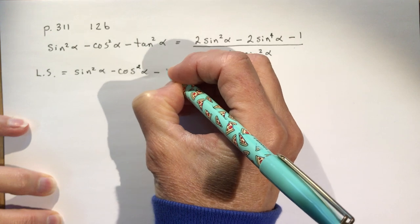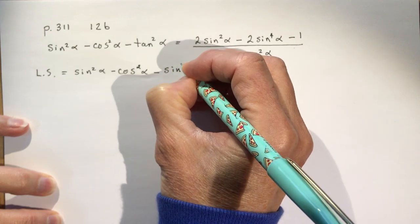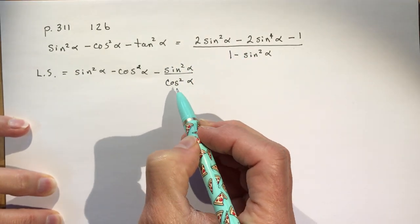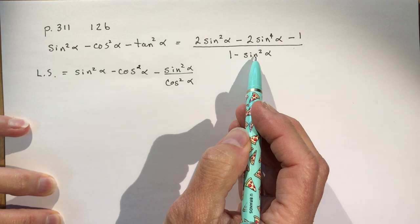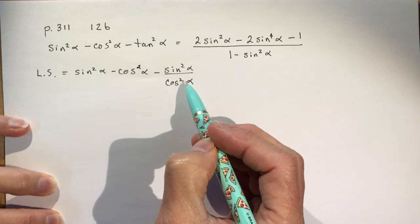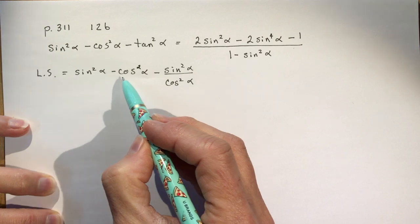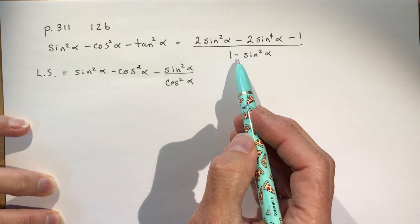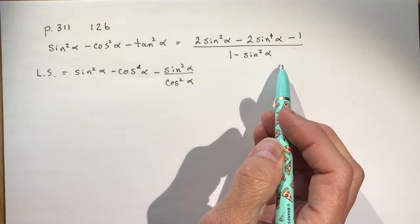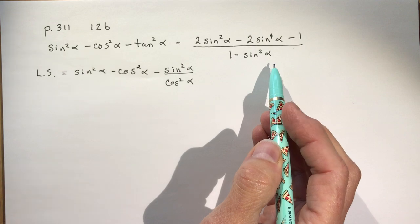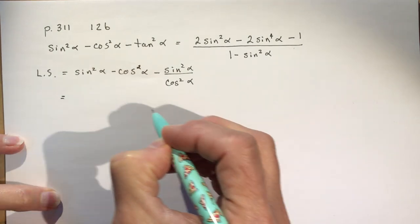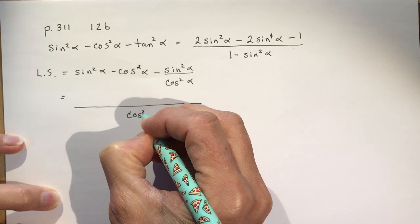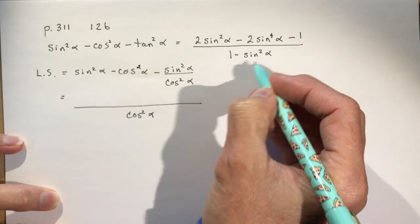So, tan squared is sine squared over cos squared. Now, I do know that cos squared alpha is 1 minus sine squared alpha, so that's a nice thing to know — if I can make a common denominator with these three terms, I can change this cos squared anytime I want to a 1 minus sine squared alpha. So I'm going to start by making everything over cos squared alpha.